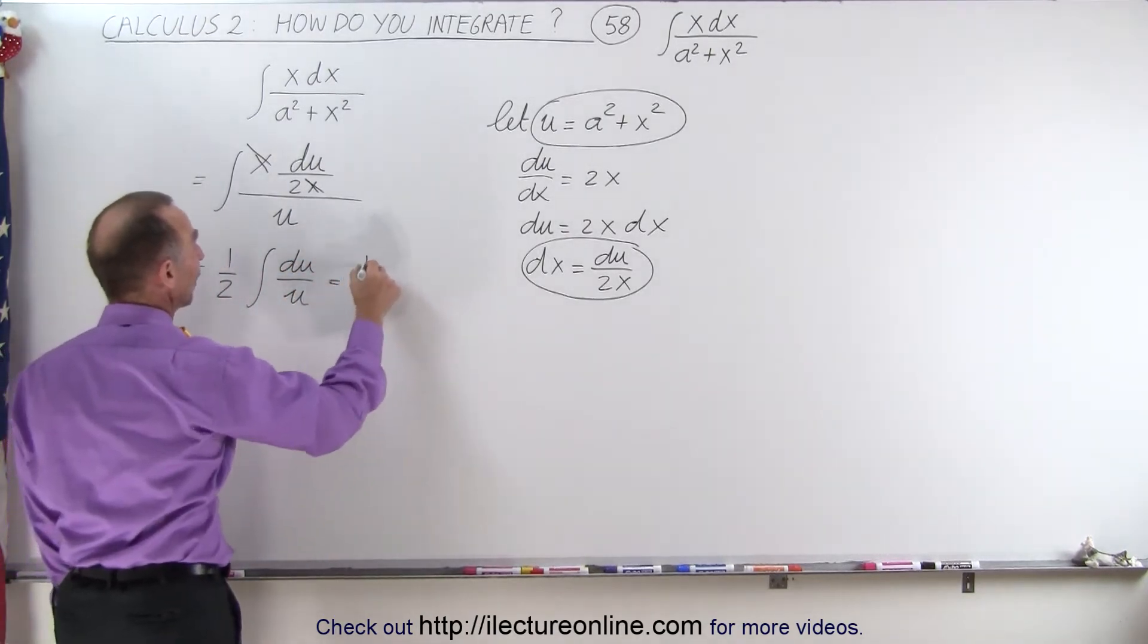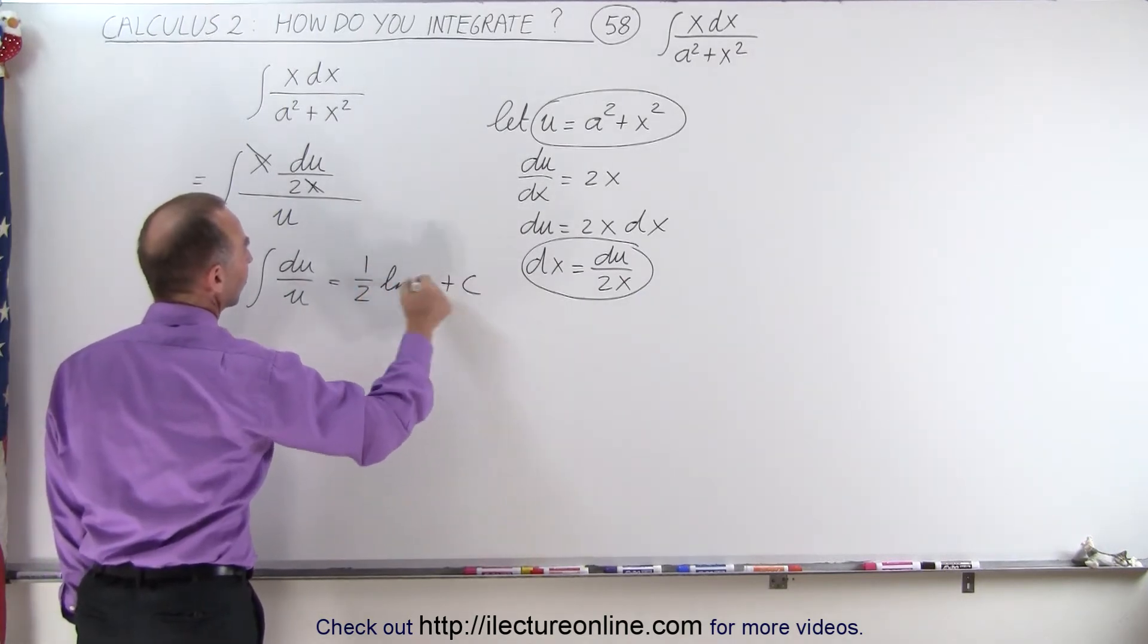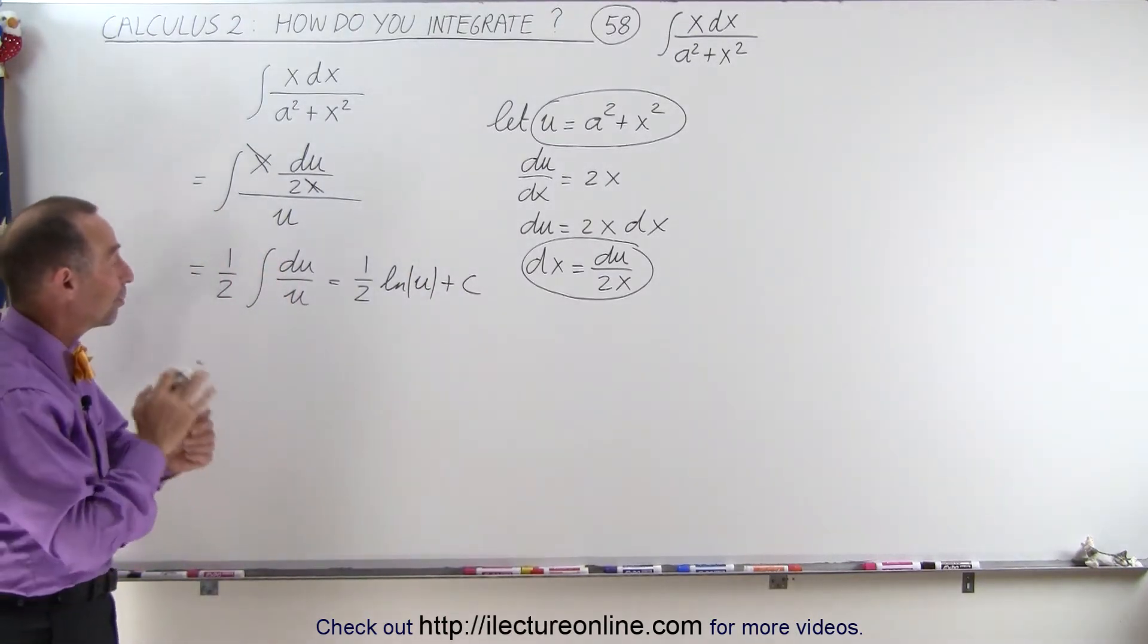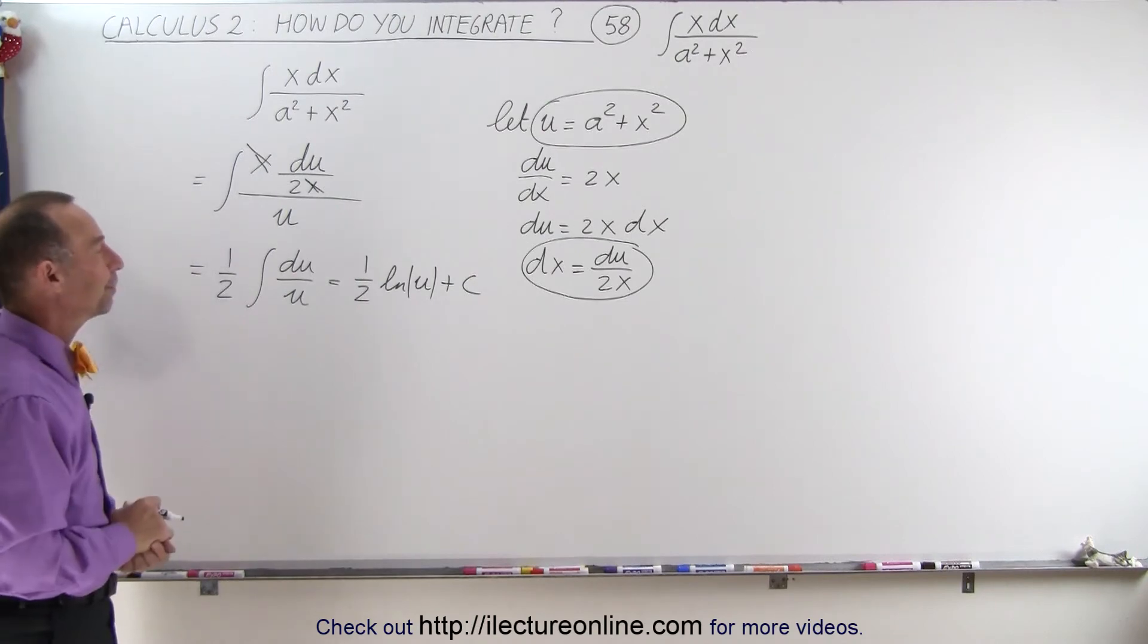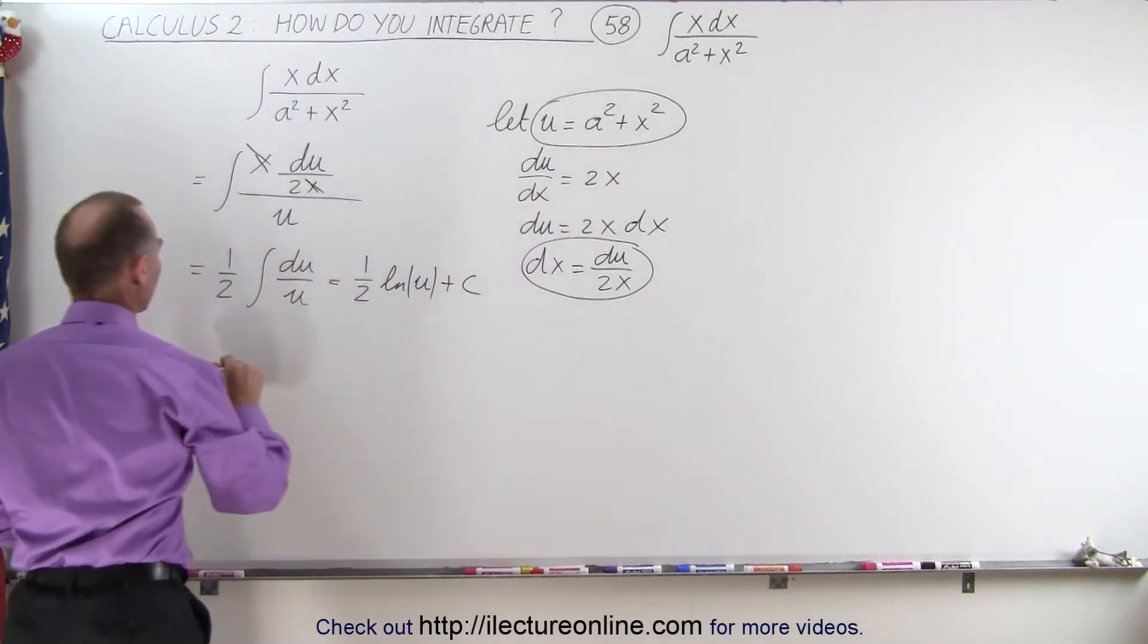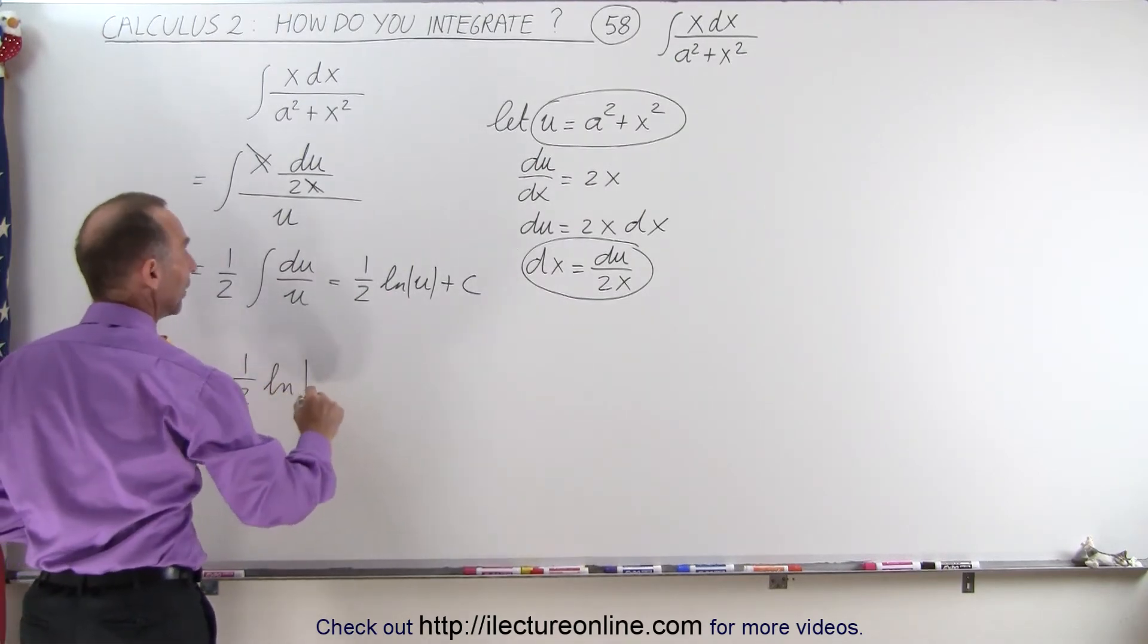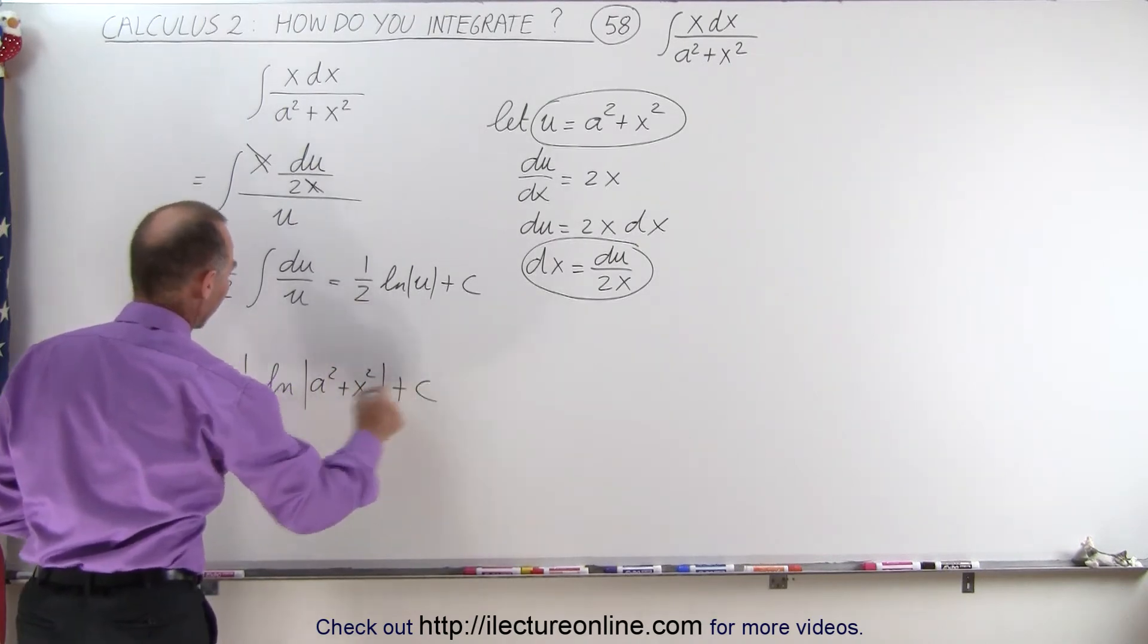That becomes equal to 1 half times the natural log of u plus a constant of integration. Of course, we should put absolute value signs around it so that if u goes negative, we don't have to worry about it. Now, we're going to substitute back in what u is equal to, so this becomes equal to 1 half times the natural log of a squared plus x squared plus a constant of integration.